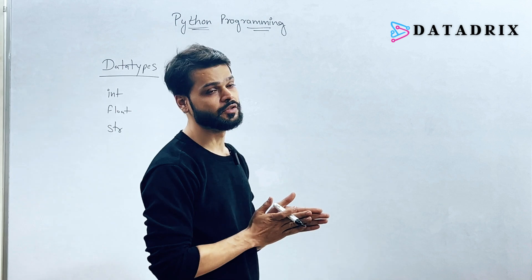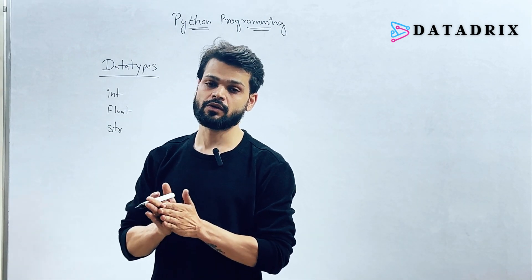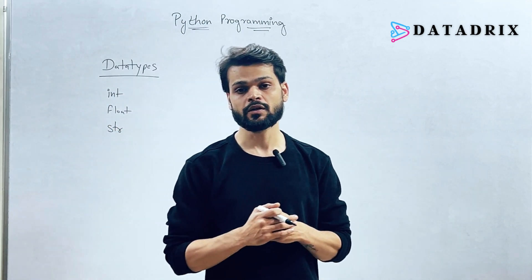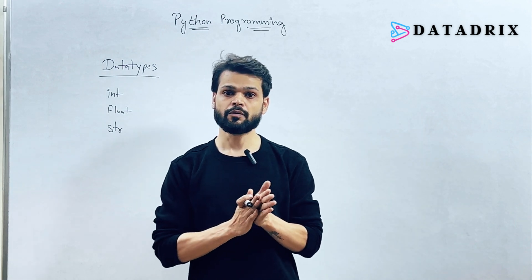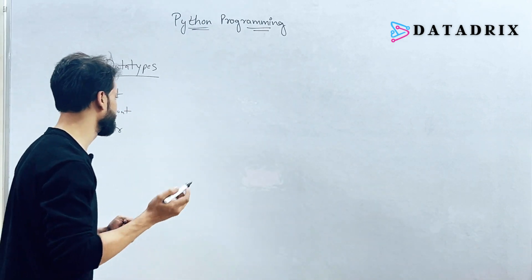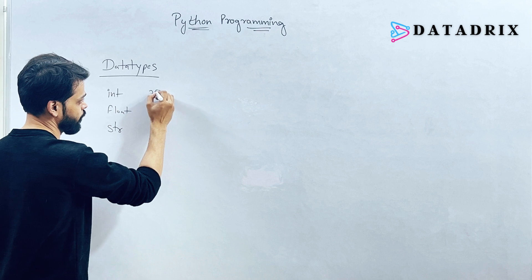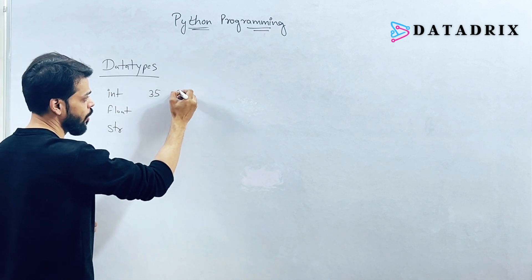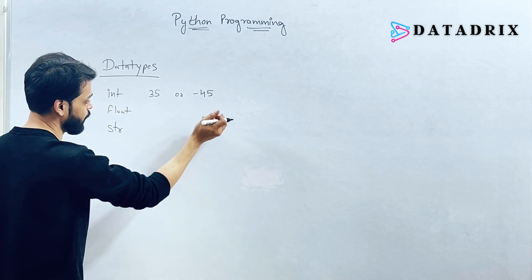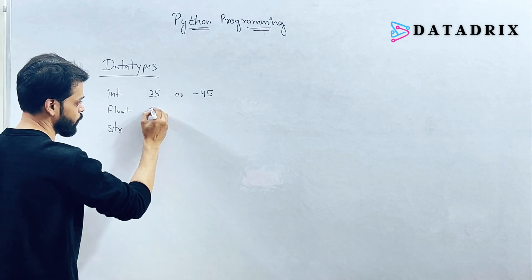Int refers to integers — positive numbers, negative numbers, including zero. For example, 35 or minus 45 are integers. Float refers to decimals. For example, 0.5 or minus 0.5 are floats. Another example: 2.5 or minus 1.5 — these are float values.